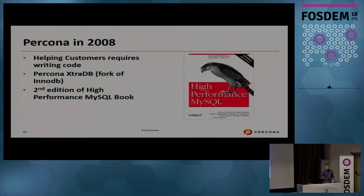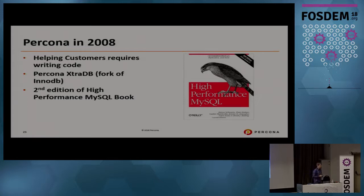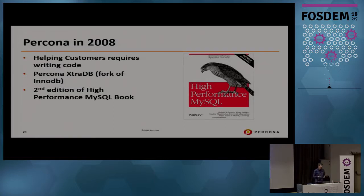We saw an opportunity, and because it was impossible to scale InnoDB without actually writing code and fixing problems, that is how we created Percona XtraDB — a fork of InnoDB. That's also when we put a lot of time and effort into writing the High Performance MySQL book, second edition — which was actually a completely rewritten book.